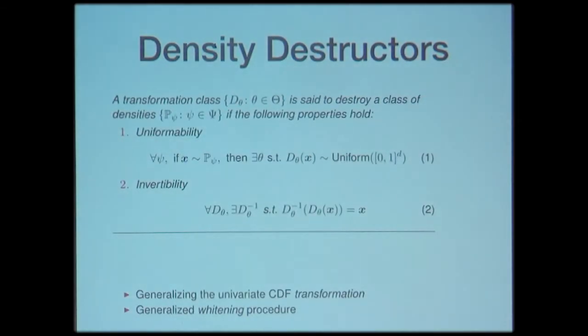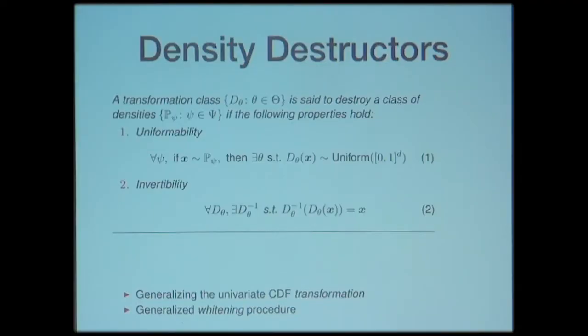More formally: given a family of densities indexed by some parameter psi, a set of transformations destroys this family if, given any density in the family, there exists a destructor that transforms the distribution to a uniform distribution over the unit hypercube — the most uninformative distribution, with maximum entropy. I also require that for any destructor transform, its inverse also exists in this family.